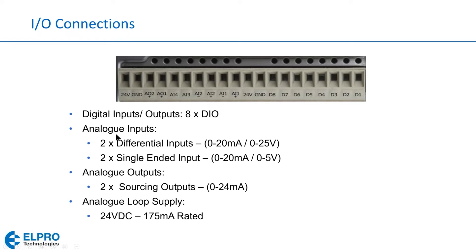We have four 4-to-20 milliamp inputs. Two are differential type and two are single-ended. The single-ended inputs refer to ground as the negative terminal for all inputs. The differential inputs have both a plus and a minus — AI1 plus and AI1 minus, then AI2 plus and AI2 minus — where you wire the 4-to-20 milliamp positive and negative connections. AI3 and AI4 are single-ended. I have another diagram in the next slide that clarifies what is meant by single-ended and differential inputs.